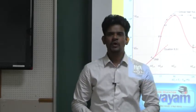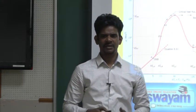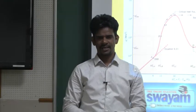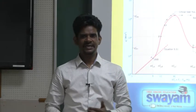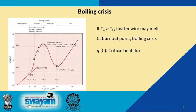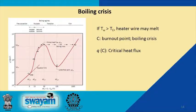In the boiling experiment there is a critical or maximum heat flux point. When we try to increase heat flux beyond this point there is a sudden jump in delta T. If this increase in delta T results in the surface temperature exceeding the melting point of the heating element, the element melts — this is referred to as boiling crisis or burnout. Therefore it is important to know the critical heat flux of a given liquid and heater combination so that we do not exceed it in our experiments.